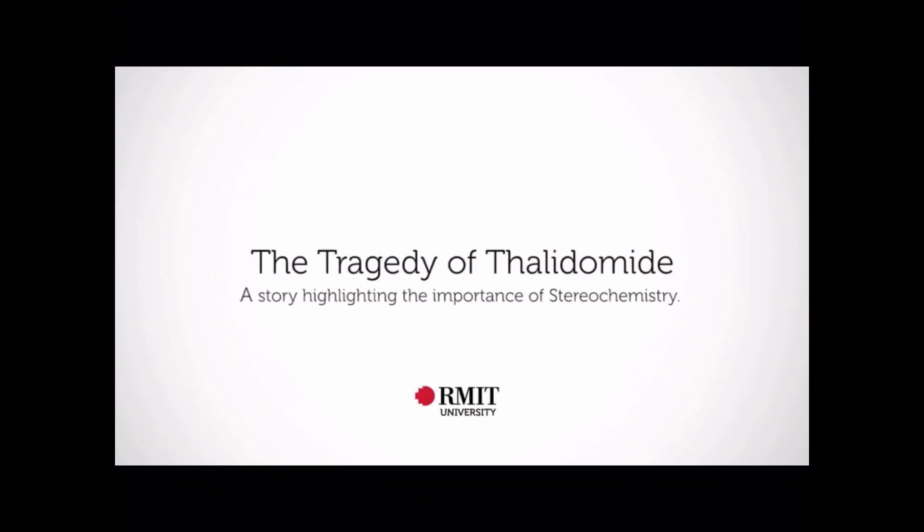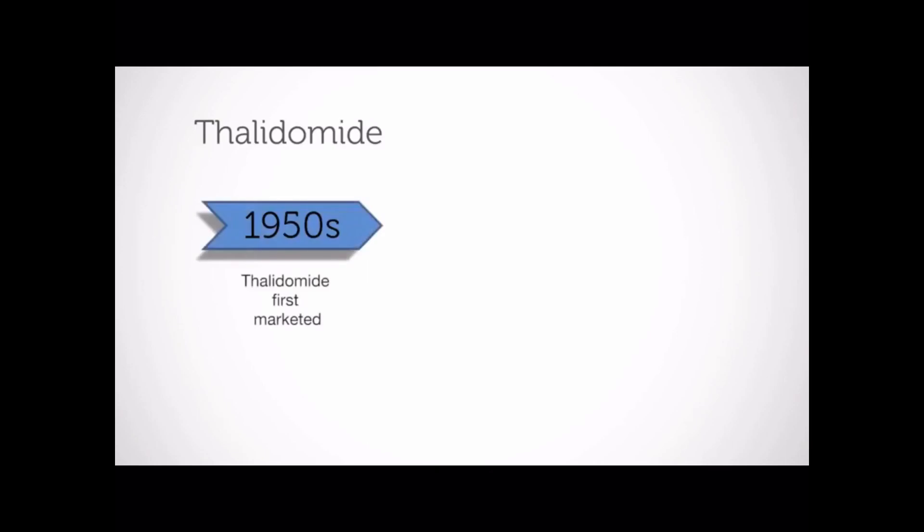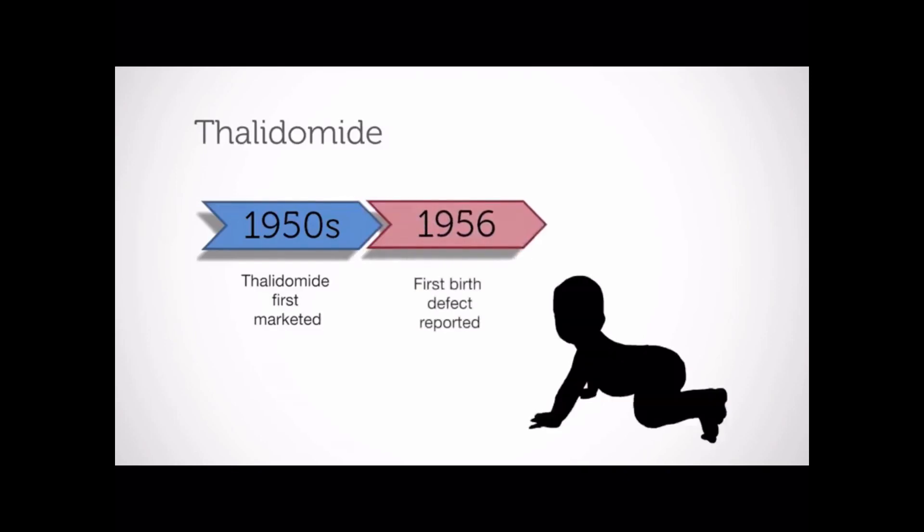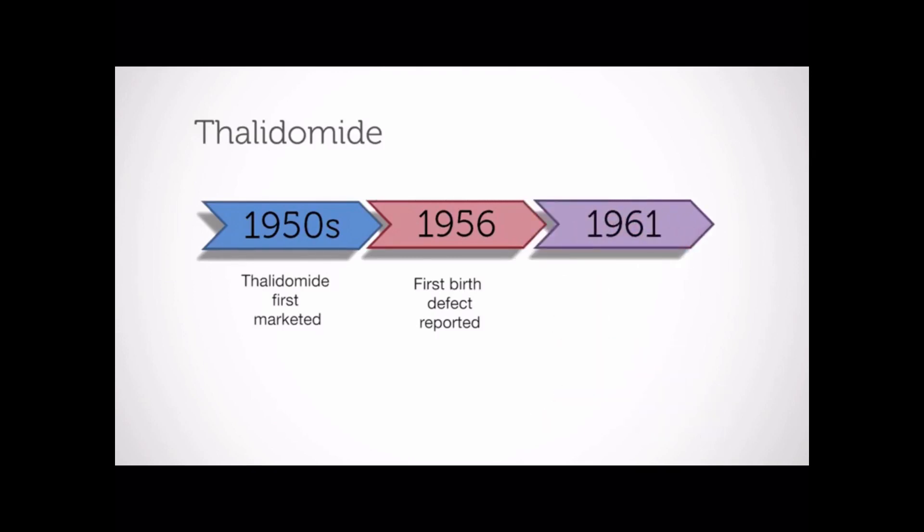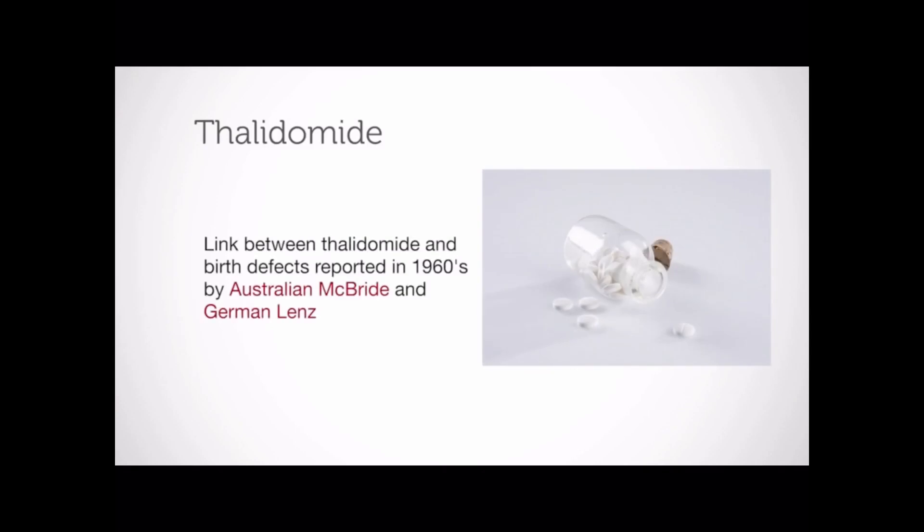This is the story of the thalidomide tragedy, which occurred in the late 1950s. What occurred highlights the importance of stereochemistry. Approximately 90% of pregnant women generally display some form of morning sickness. By the mid-1950s, thalidomide was being marketed and prescribed around the world, including Australia and New Zealand, to alleviate morning sickness in pregnant women. Although thalidomide effectively suppressed morning sickness symptoms, the drug caused severe and adverse birth defects. The first birth defect was reported in 1956. Making headlines around the world, the drug was withdrawn from sale. Australia ceased sales in 1961. It was the Australian obstetrician William McBride and a German paediatrician, Vidikind Lentz, who suspected a link between birth defects and the drug in the 1960s.